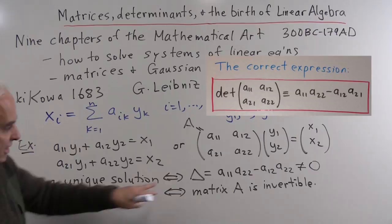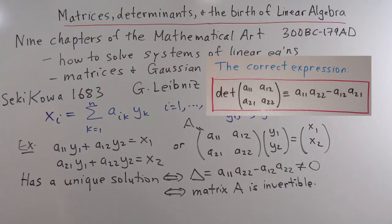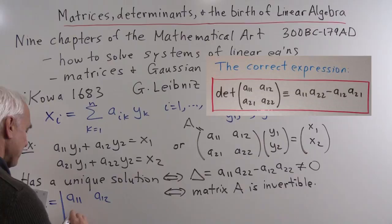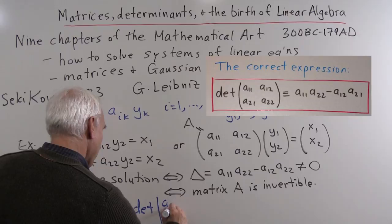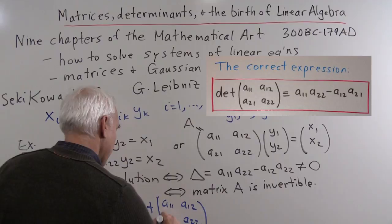This quantity delta is the central object in the topic of determinants. This is an example of a determinant, and it has a special form — we write it sometimes with vertical bars or square brackets around the matrix entries: determinant of [A11, A12; A21, A22]. So this quantity delta equals A11·A22 minus A12·A21 is an example of a determinant.